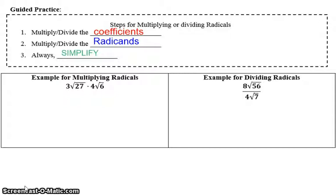So the first thing that you want to do, if it's a multiplication problem such as this one, you want to multiply the coefficients, then multiply the radicands. After you do so, then you're going to simplify. If it's a division problem, like to the right, we want to divide the coefficients, then divide the radicands, and then lastly simplify.